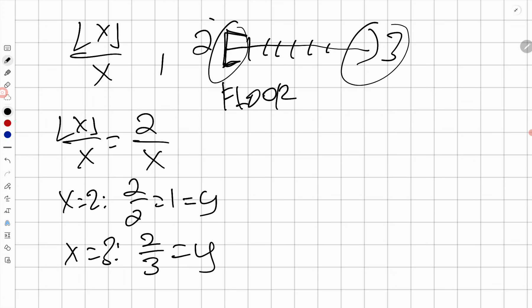So over the interval that goes bracket two, parentheses three, when x is two, y is one. When x is three, y is two thirds, so two thirds is here, but it's a hole. Remember, the three itself is not part of the domain. And the rest of the shape is determined by two over x, so it looks like this.